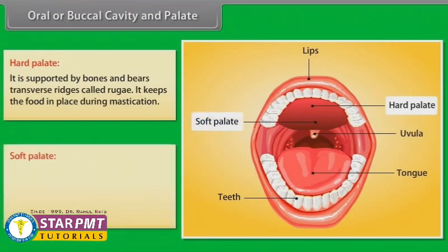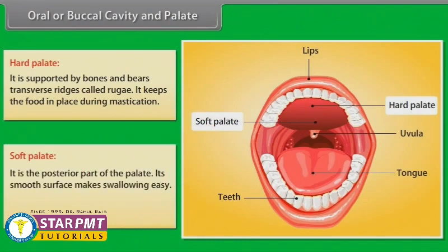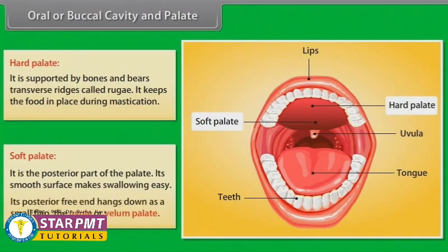The soft palate is the posterior part of the palate. Its smooth surface makes swallowing easy. Its posterior free end hangs down as a small flap called the uvula or velum palate.